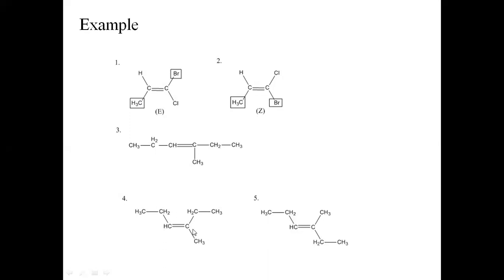Consider the next molecule: carbon double bond carbon. One carbon has an ethyl group (CH2CH3) and one hydrogen — the ethyl group is the highest priority. The other carbon has an ethyl group and a methyl group — the ethyl group is again the highest priority. Since both highest priority groups (ethyl on each carbon) are on the same side, this isomer is called a Z isomer. If the ethyl groups are on opposite sides — one on the upper side and the other on the lower side — then it is called an E isomer.